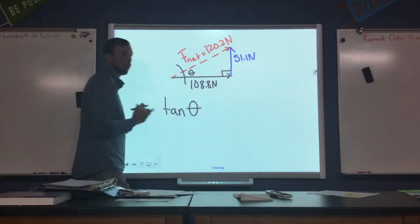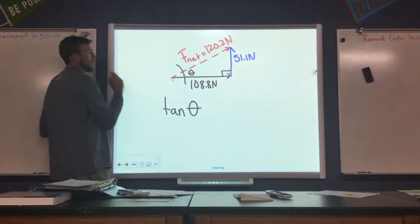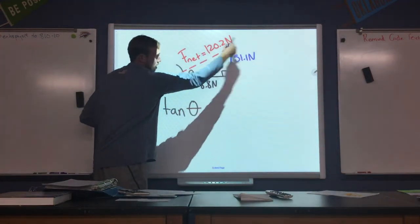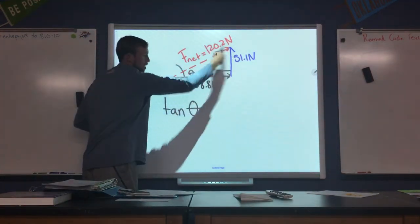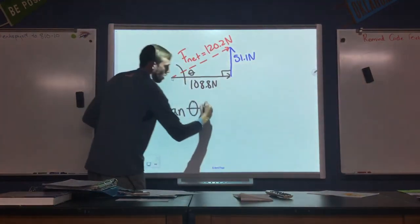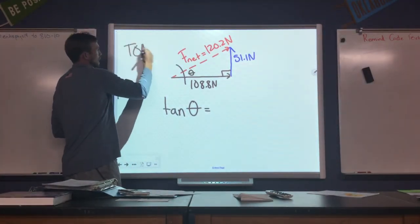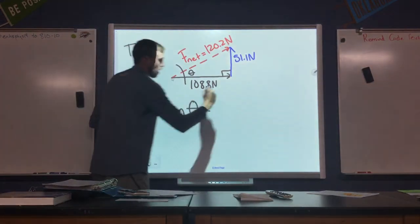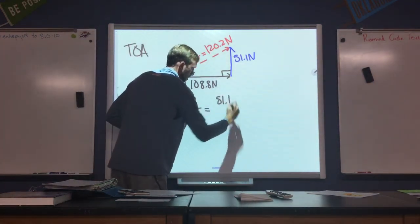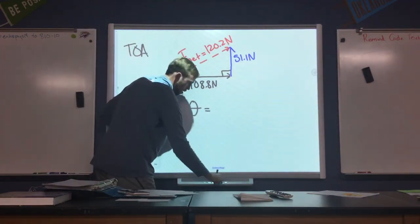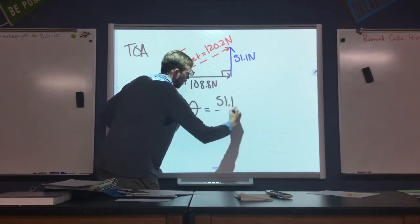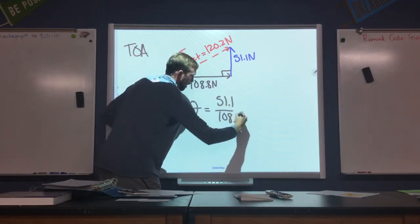So I would set up a trig function that looks like this: tangent of our angle theta. The reason I use tangent is because I know the opposite and the adjacent sides. So tangent, if you remember, SOH-CAH-TOA. Tangent is opposite over adjacent. So I'm going to take 51.1 divided by 108.8.